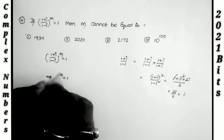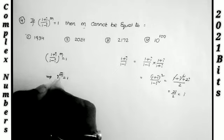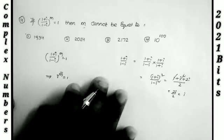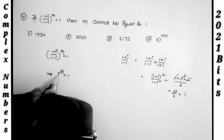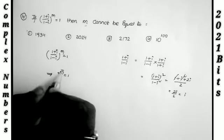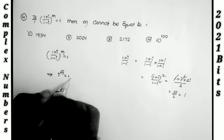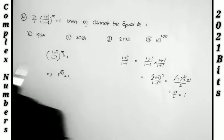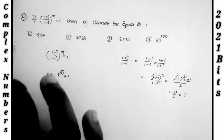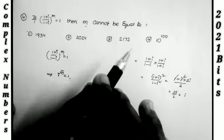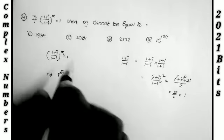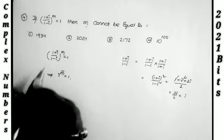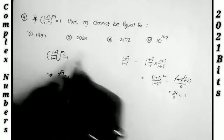So we need to check which of the given options is NOT a multiple of 4. We check each option by dividing by 4 and seeing if the remainder is zero.